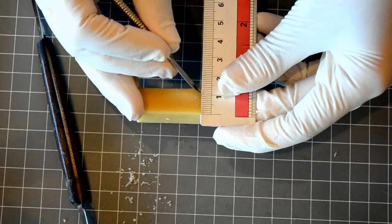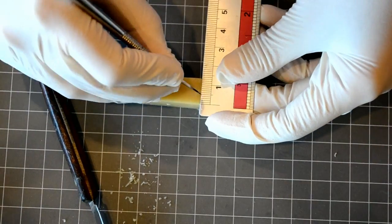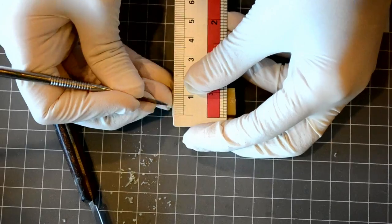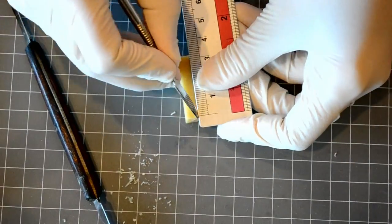Next, carve a vertical line at the center of each aspect using your electron carver. This will help you accurately plot your measurements on the wax block.